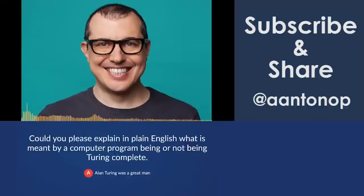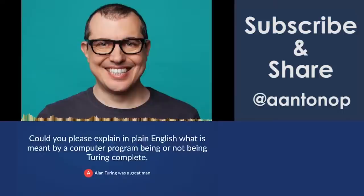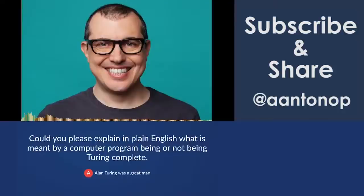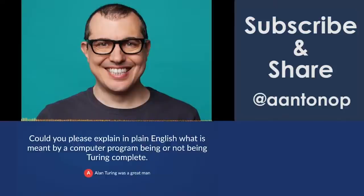One of the important characteristics of Turing complete programs is that when they go into a loop, you don't know if they're going to reach an exit condition and stop running. In fact, Alan Turing proved that you can't know in advance whether a computer program will terminate. This is why if you have a programming language that is Turing complete, you don't know if it's ever going to finish running — it has an unpredictable, unprovable runtime.